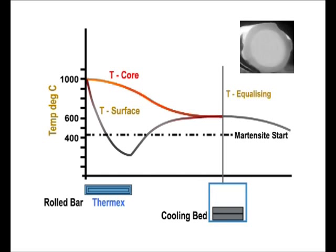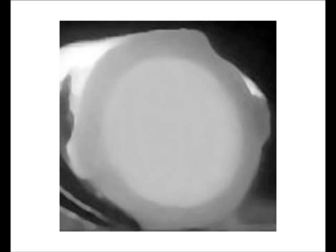A thermal exchange occurs between the core and peripheral martensite. This thermal exchange results in a bar structure consisting of a tempered martensite periphery and a fine-grained ferrite pearlite core.